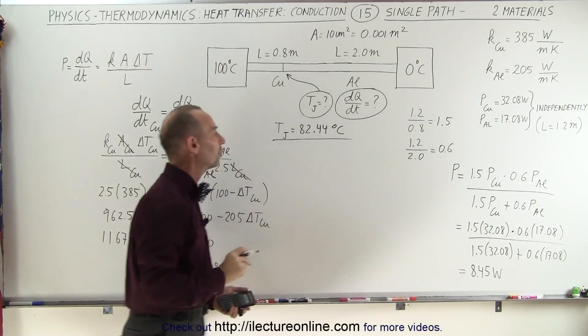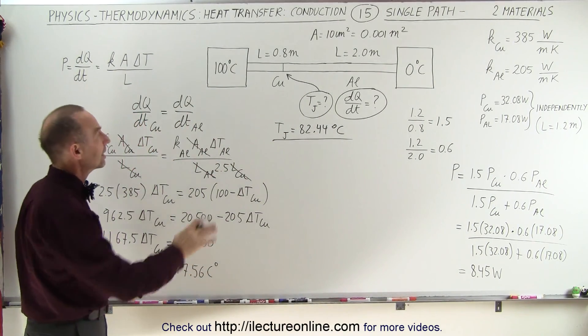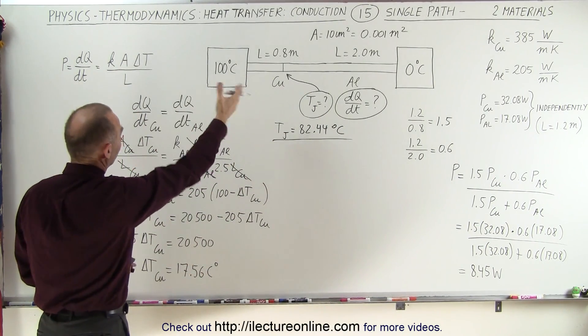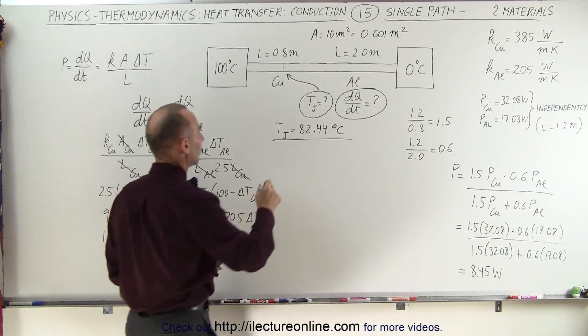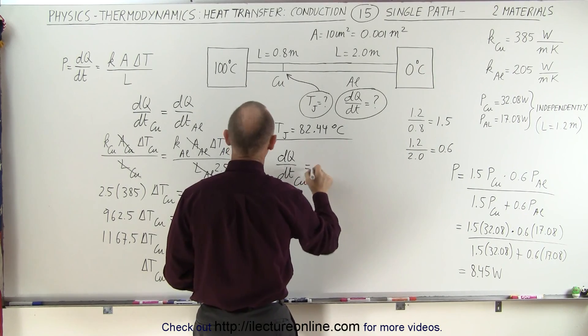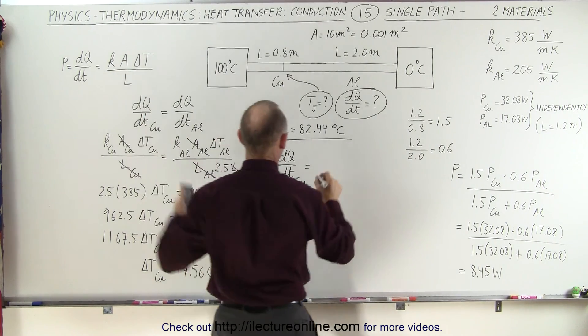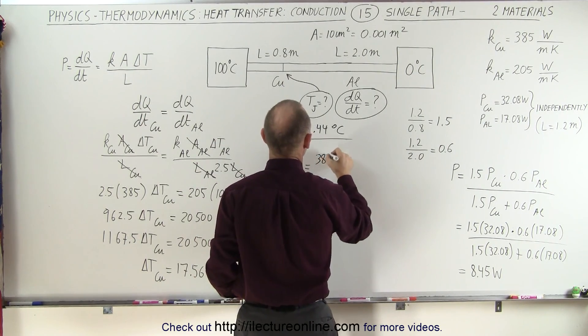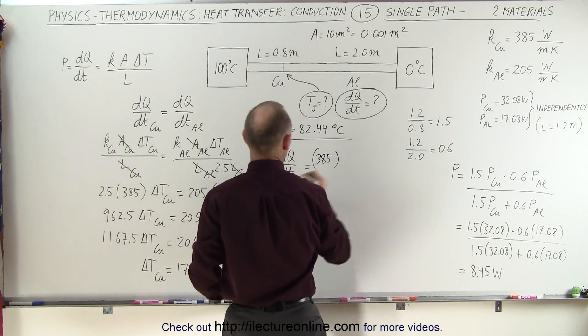So now we have the junction temperature, and now we're able to find the heat transfer through one of the sections. So let's take the copper section, so the dq dt to the copper section is equal to, we'll take the constant 385 times the cross-sectional area 0.001 times the change in the temperature.